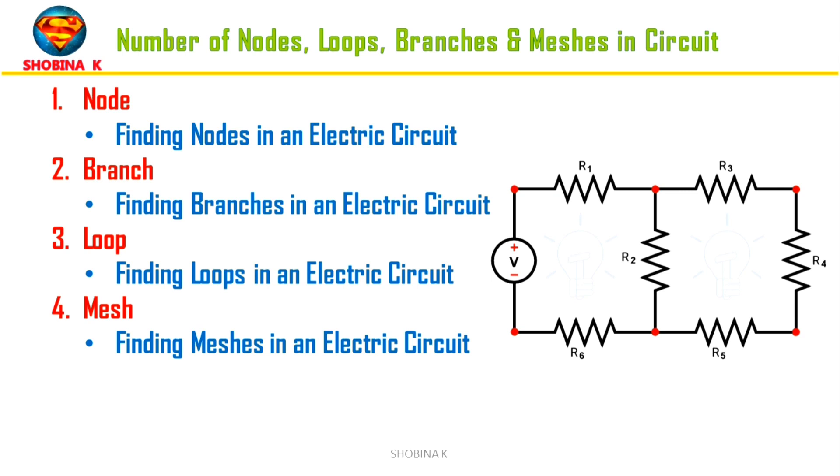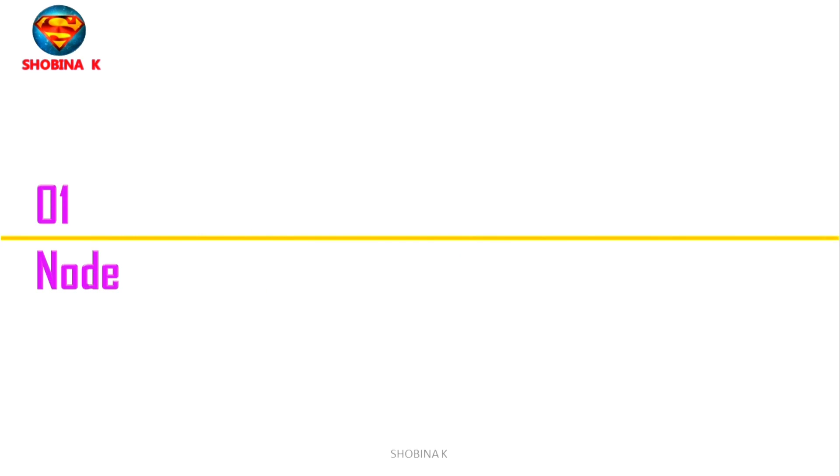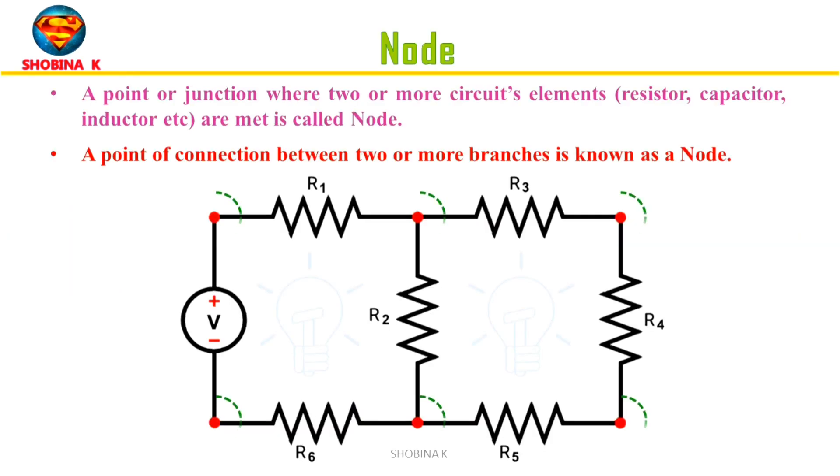Hi everyone, in this video we will see what is node, branch, loop, and mesh. Also, we will find the number of nodes, loops, branches, and meshes in the circuit. First, what is node? It is a point or a junction where two or more circuit elements like resistor, capacitor, inductor meets.